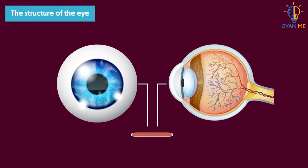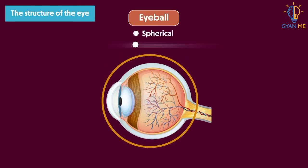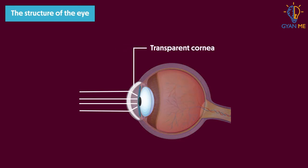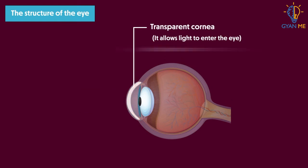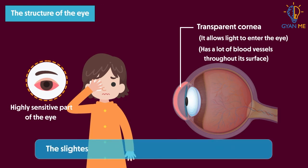This white part that you can see here is called the cornea. It is a bulge on the front surface of the eyeball. This whole structure is called an eyeball — it is spherical with a diameter of about 2.3 cm. The light that enters the eyeball first strikes the transparent cornea, because it allows light to enter inside the eye. Cornea also has a lot of blood vessels throughout its surface, making it a highly sensitive part. The slightest injury here generates a lot of pain.